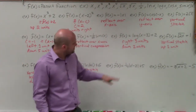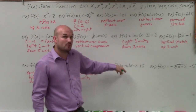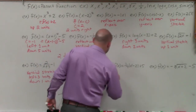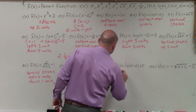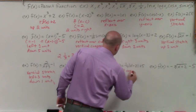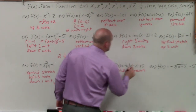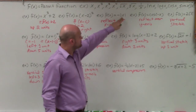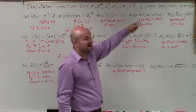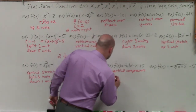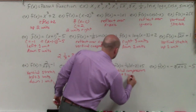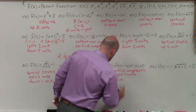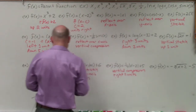On this next one, I'm multiplying by 1 fourth. Since the absolute value of 1 fourth is less than 1, that's a vertical compression. Then I have the absolute value of (x minus 2) plus 5 — I'm subtracting 2 inside my absolute value and adding 5 outside. So that's right 2 units and up 5 units.